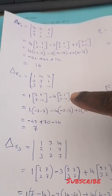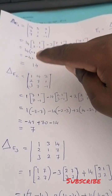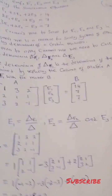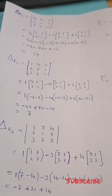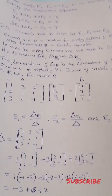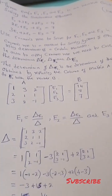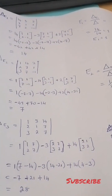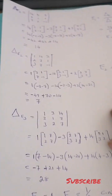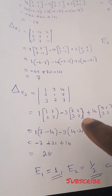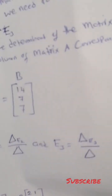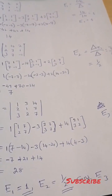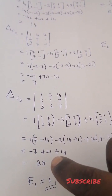Then you go to the determinant of A2, for E2. You replace the coefficient column of E2 with the constants matrix B. Similarly for E3, you replace the coefficient of E3 with the constants 14, 7, 17. You are going to get the determinant of E2 is 7, and the determinant of E3 is 28.